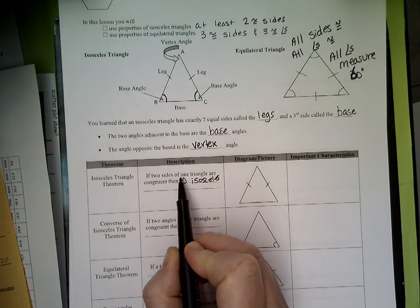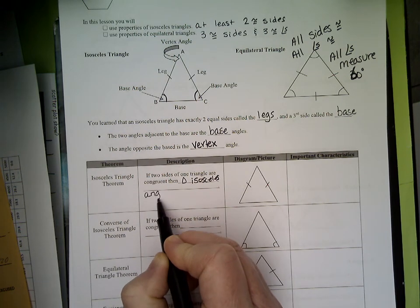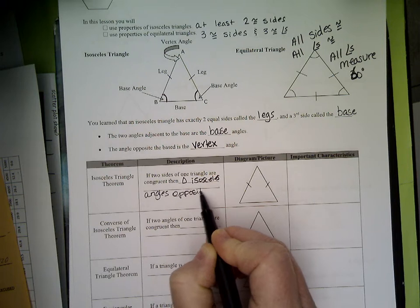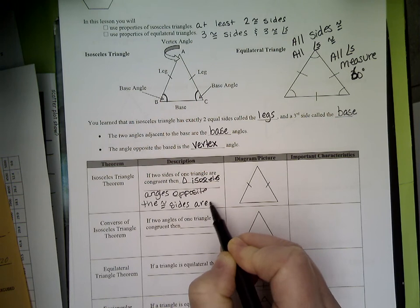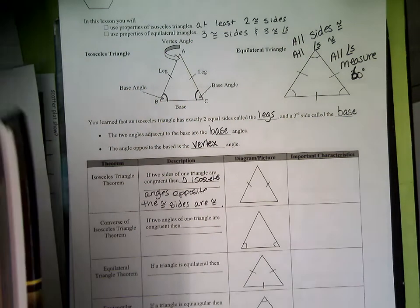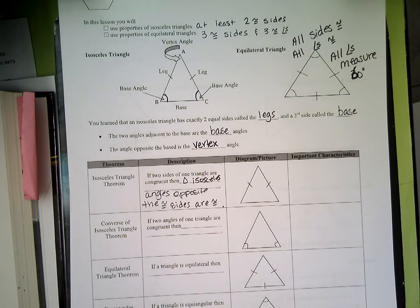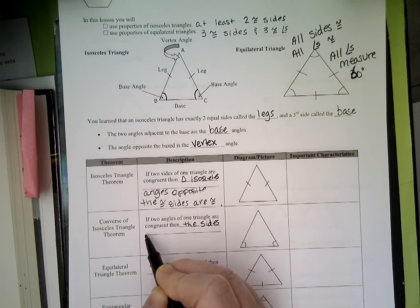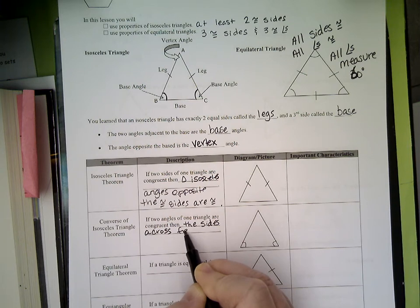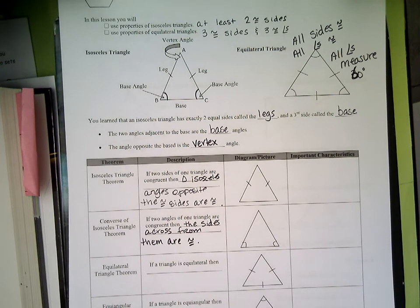We need to say if two sides of one triangle are congruent, then the angles opposite the congruent sides are congruent. That is the isosceles triangle theorem, which you may be using to answer questions and fill out proofs. The converse of the isosceles triangle theorem: if two angles of one triangle are congruent, then the sides across from them are congruent.